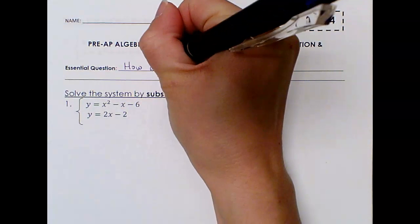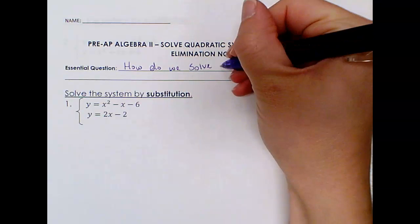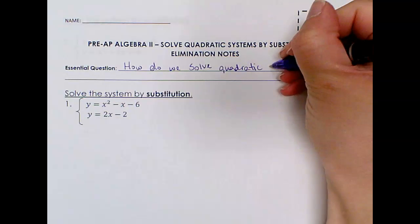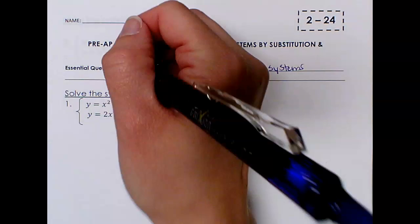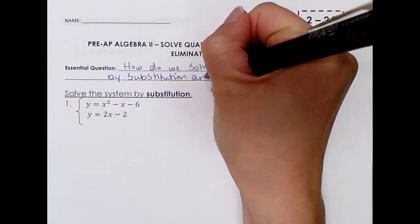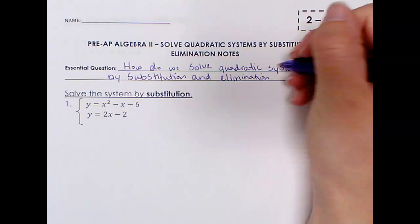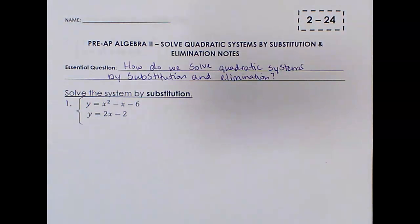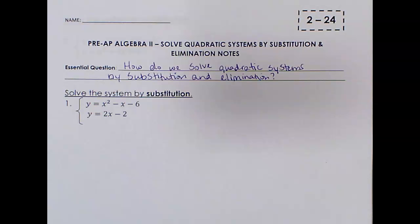How do we solve quadratic systems by substitution and elimination? So just a quick little review. Whenever you solve a system by substitution, what that means is that you're taking some variable that is already solved for and you're taking the expression that that variable equals and substituting it into the other equation so that you could solve for a variable. Also remember that when we solve systems, the solutions are actually an ordered pair, so once you get one variable's value, you need to plug it back in to get the other variable's value.